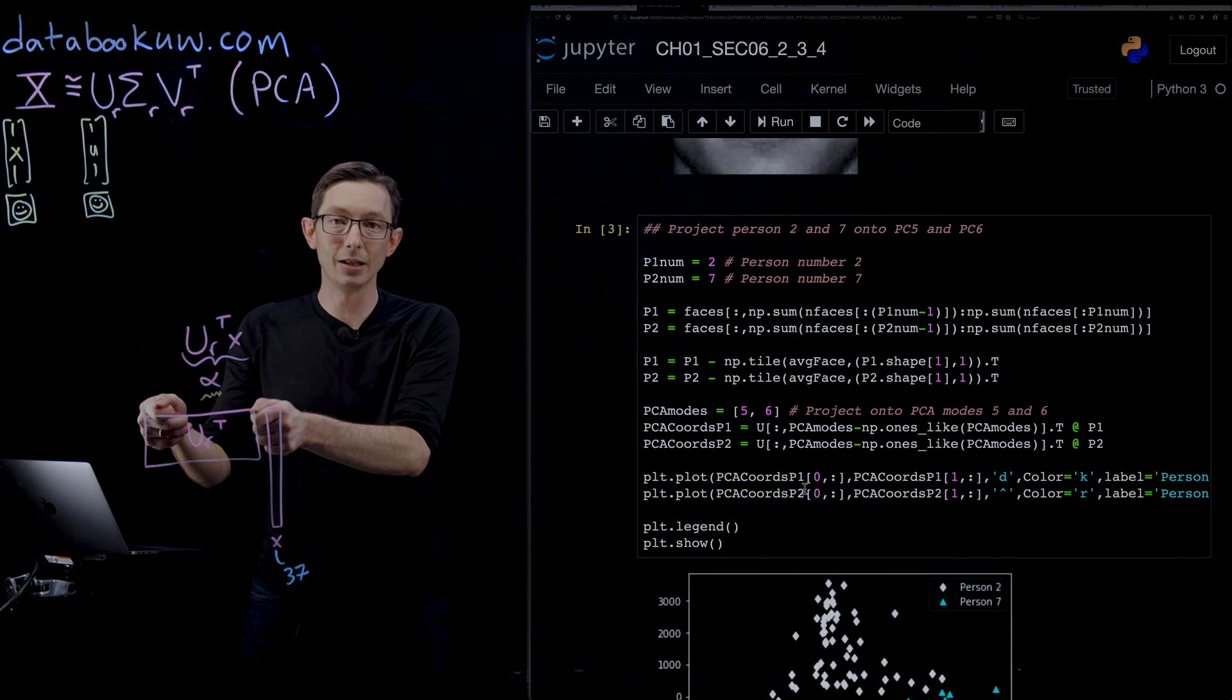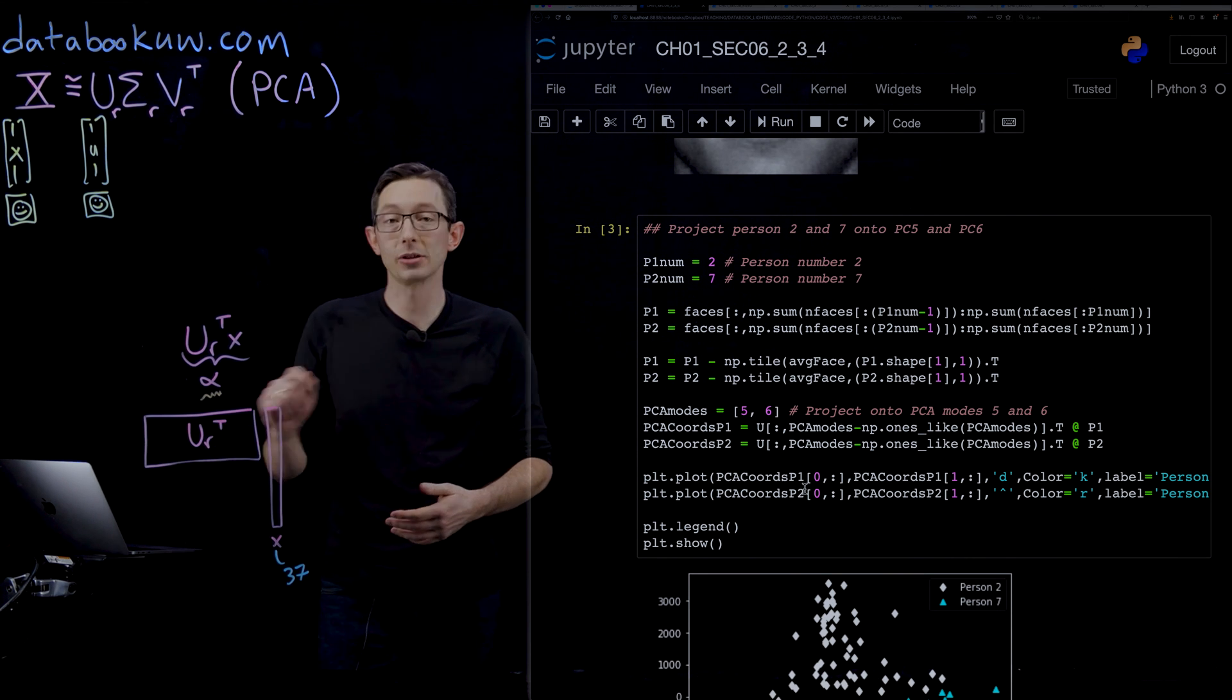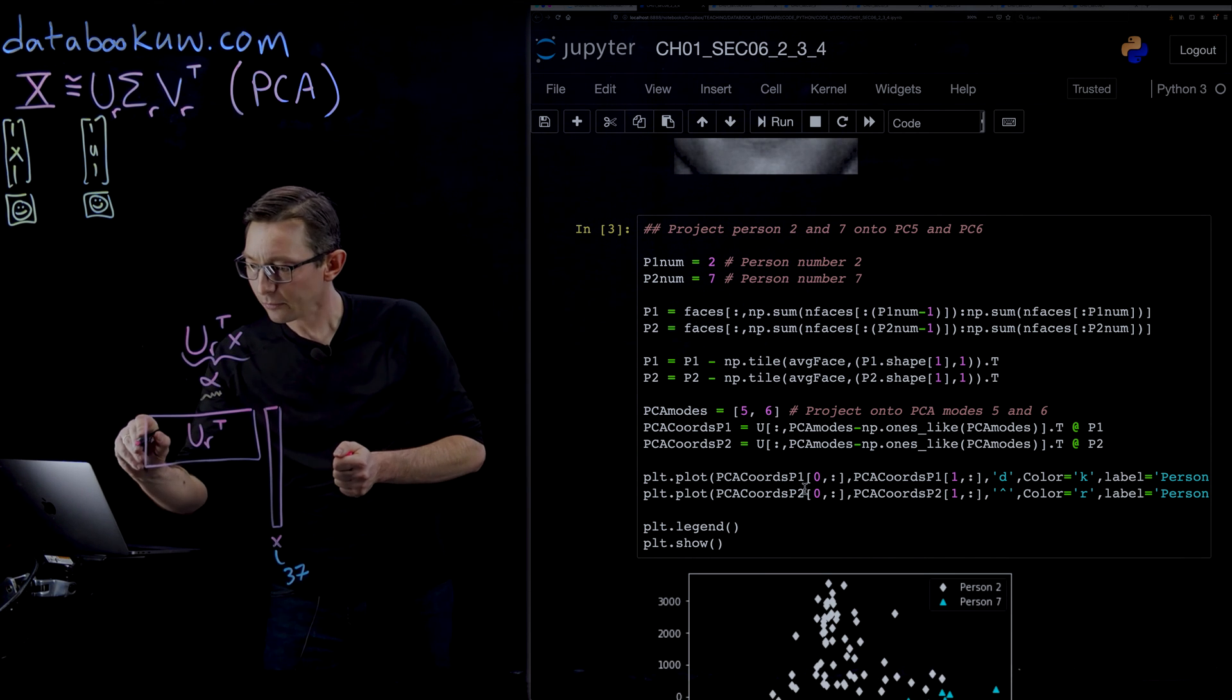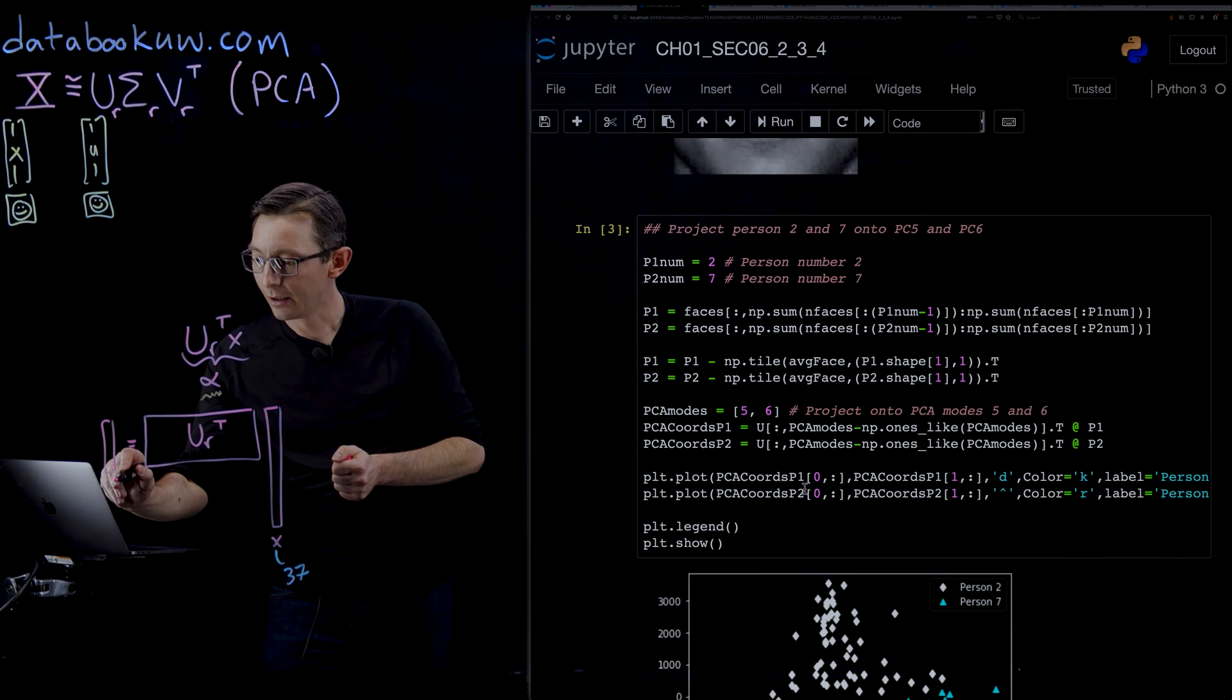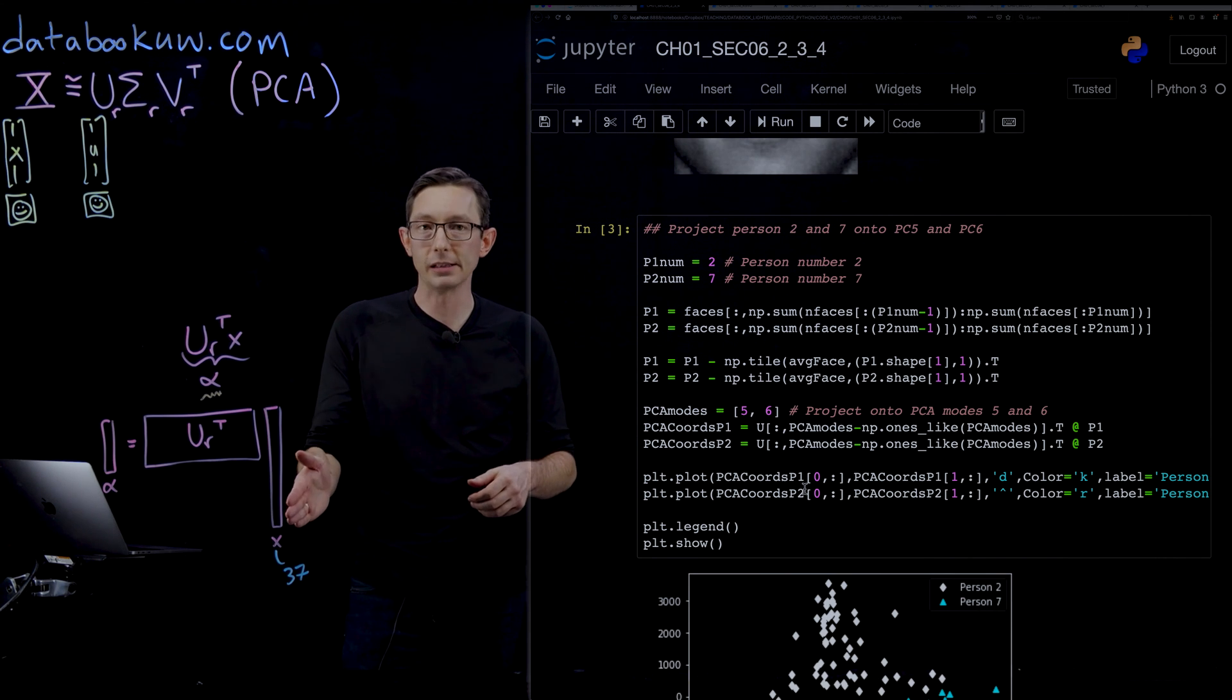You can project it into the first r-dimensional eigenface coordinates—these first four columns of U transposed. What you get out is this little A or alpha vector, which is kind of a fingerprint for that person's face in this basis.